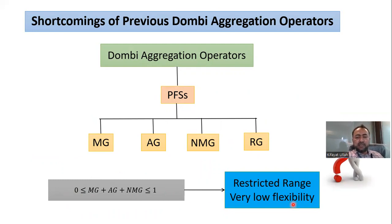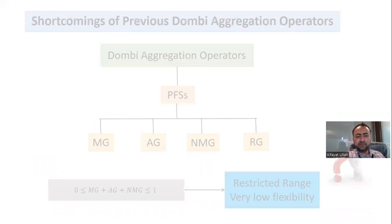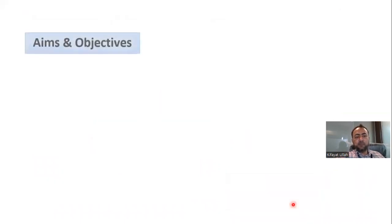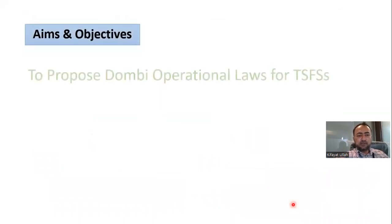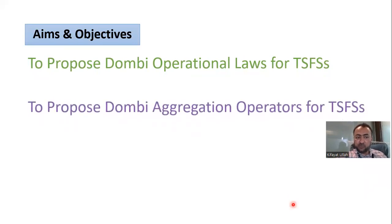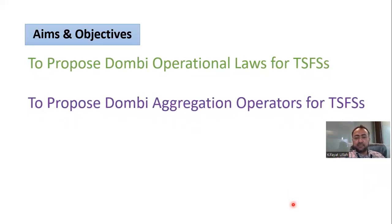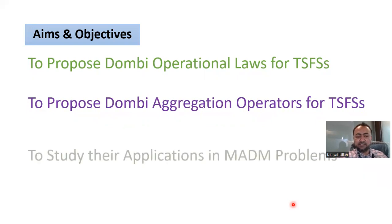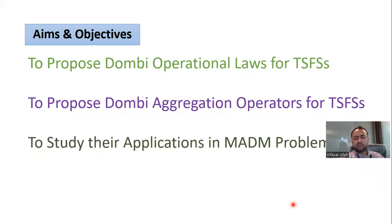To remove these limitations and produce more flexible Dombi aggregation operators, the aims of this paper were: to propose Dombi operational laws for T-spherical fuzzy sets, to propose Dombi aggregation operators for T-spherical fuzzy sets, and to study their applications in multi-attribute decision-making.